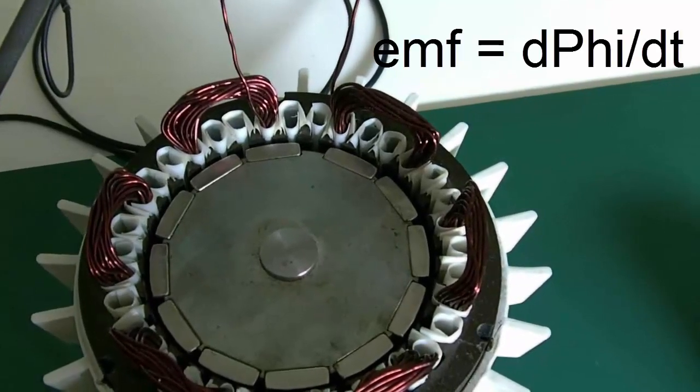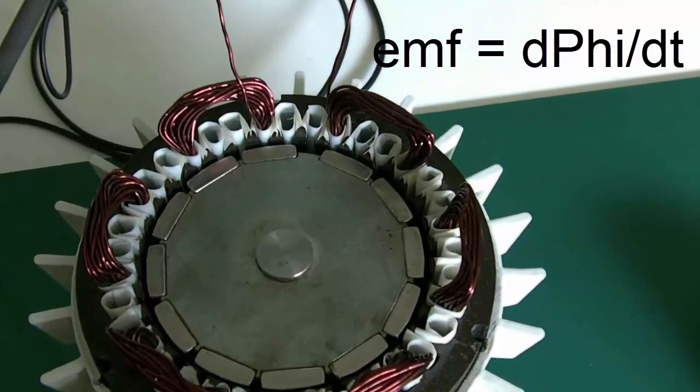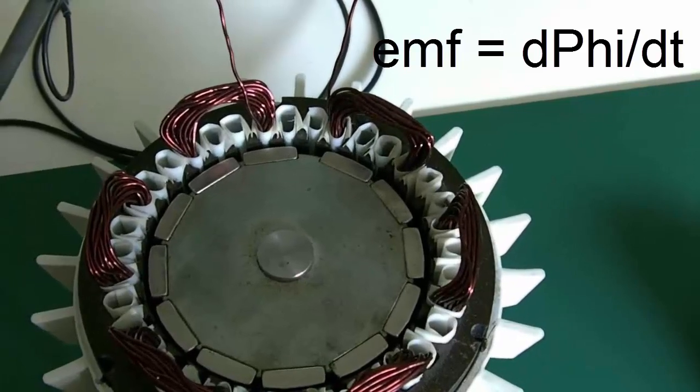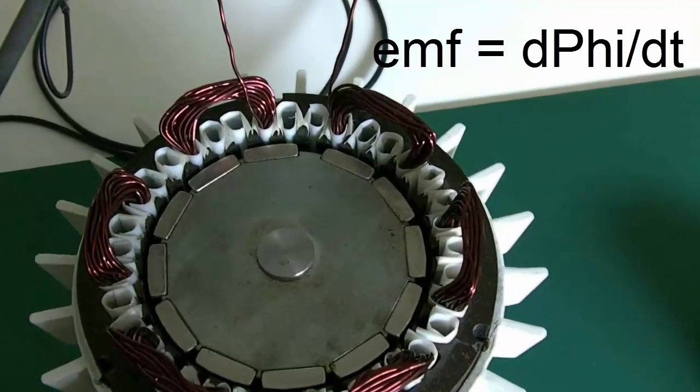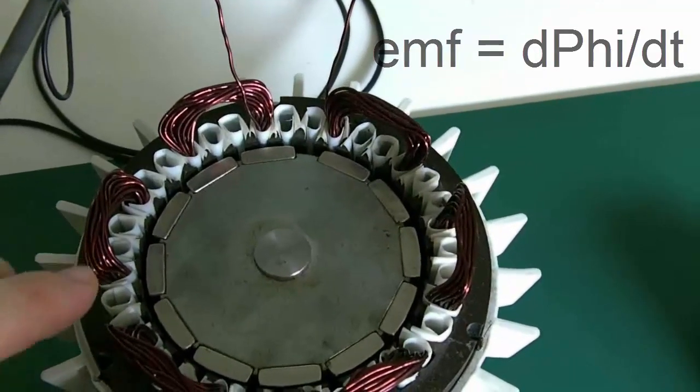dphi/dt is the other form of induction, which is the time rate of change of the magnetic field, which is similar to the velocity in the other equation. So dphi/dt, which is the time rate of change of the magnetic field in the proximity of the conductor.